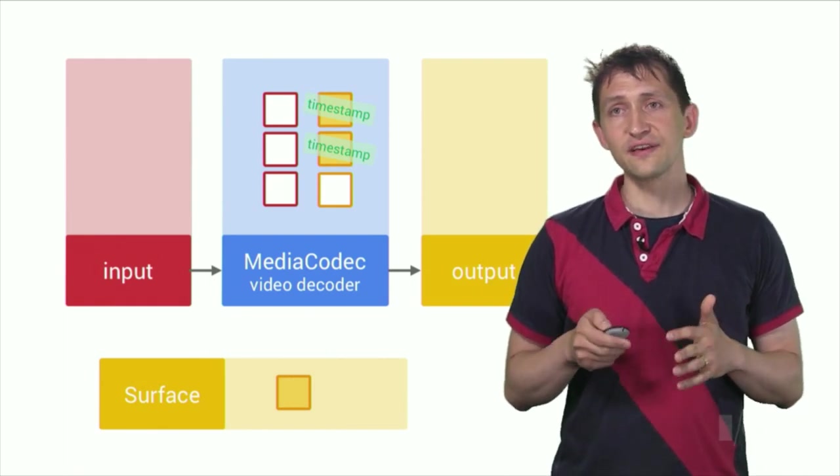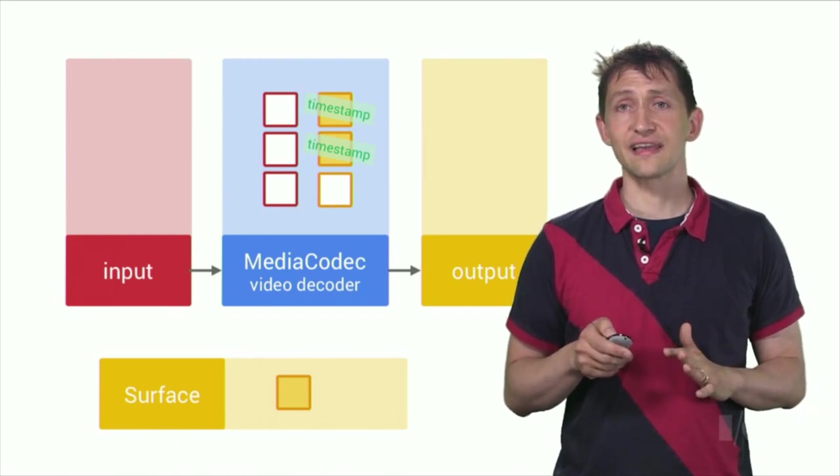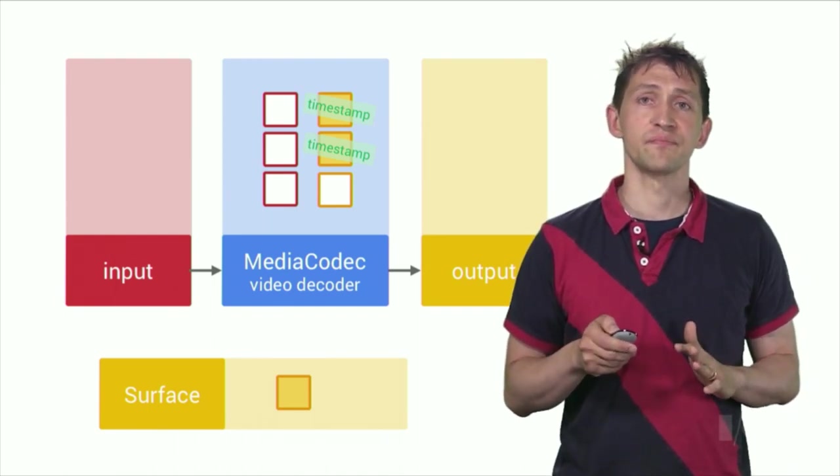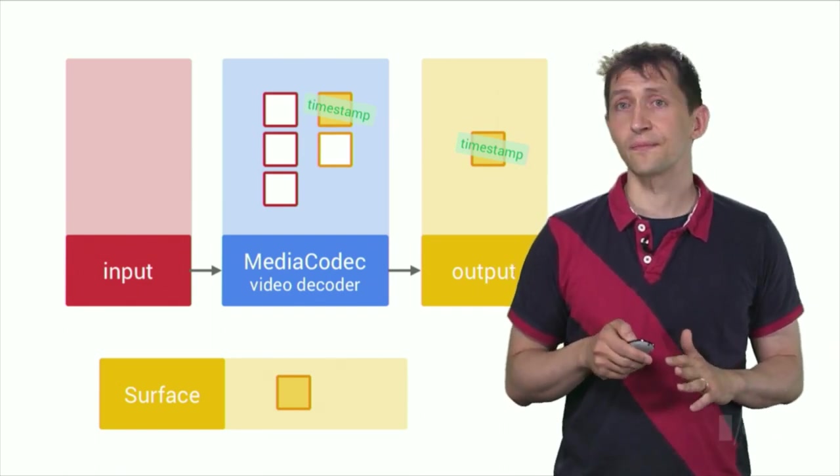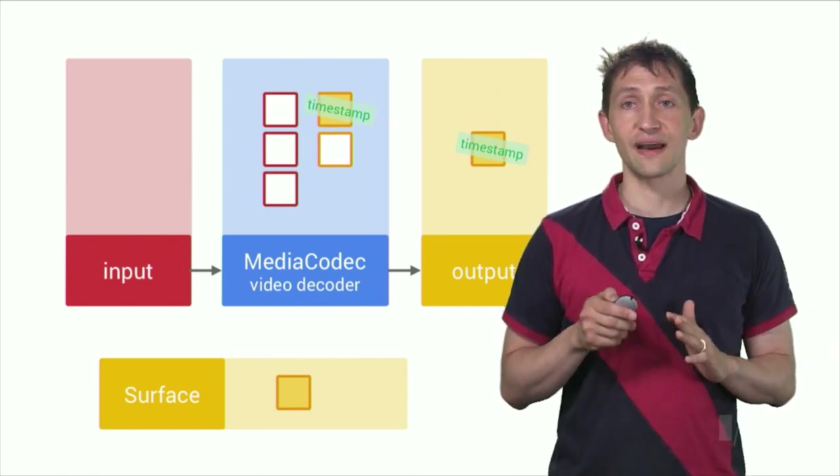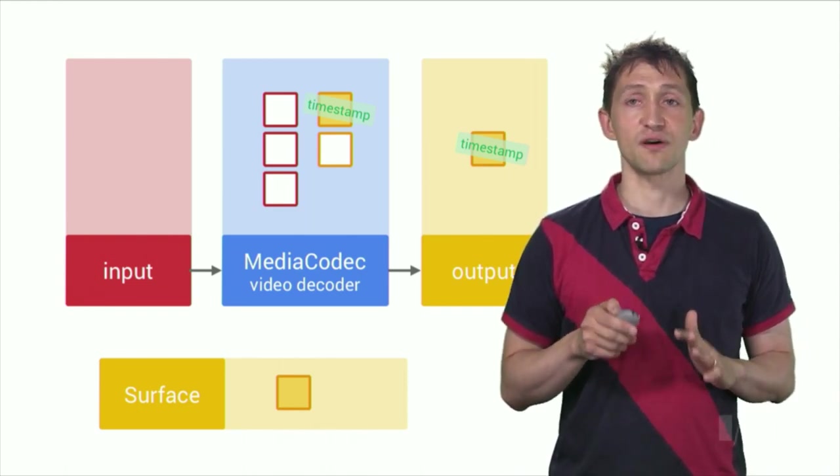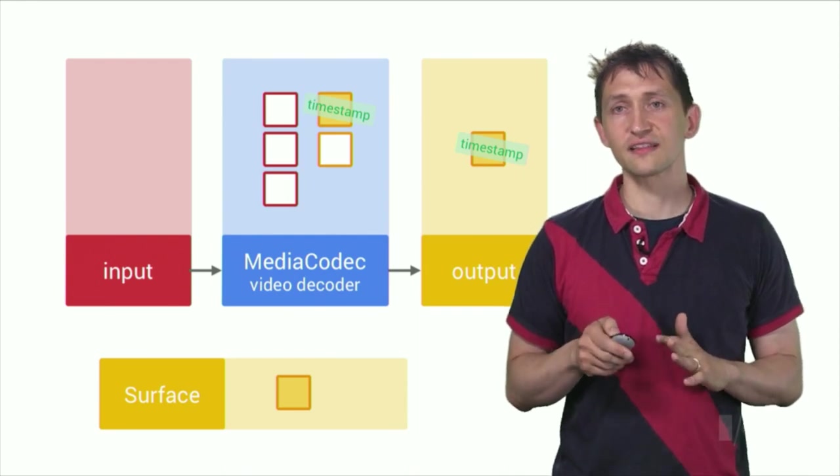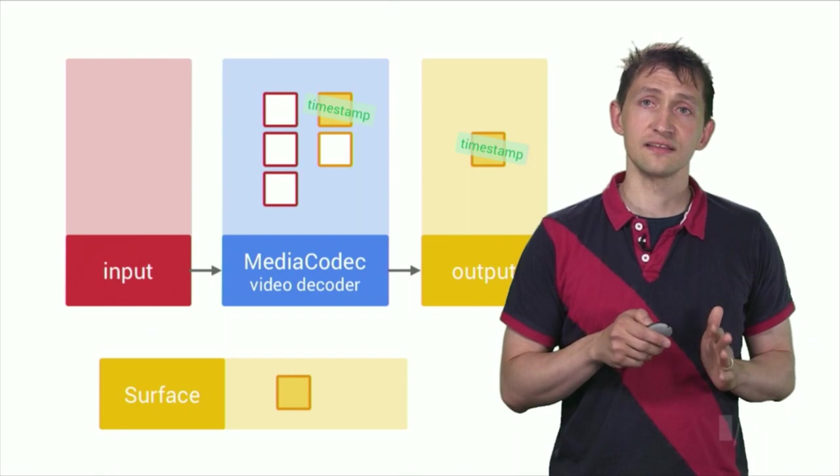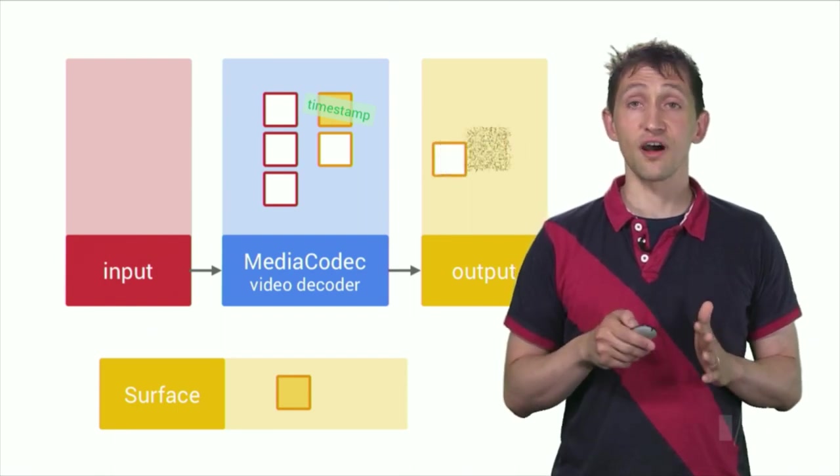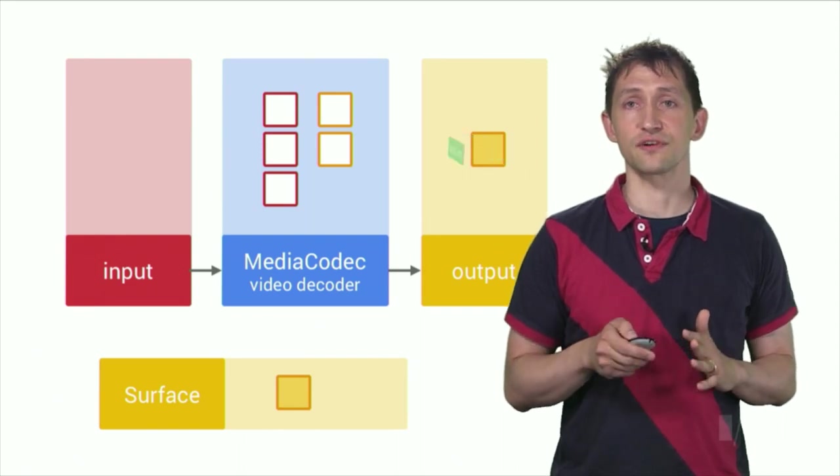Likewise, you can configure video decoders to use hardware-accelerated output buffers by specifying an output surface in configure. Use the familiar dq output buffer to get the index of a filled output buffer. However, in contrast to byte buffers, you cannot inspect the contents of surface output buffers. You can only decide whether or not to send the buffer onto the output surface. To discard it, call ReleaseOutputBuffer with render set to false. Or, set render to true to display the buffer on the output surface.